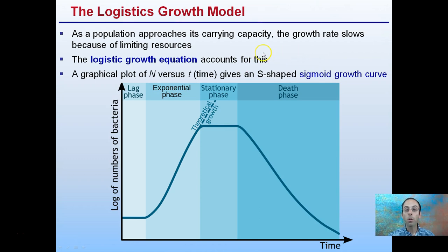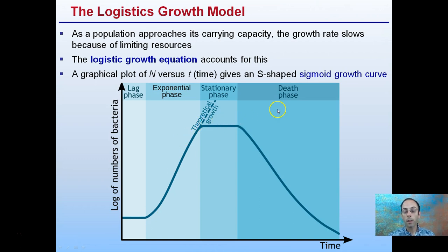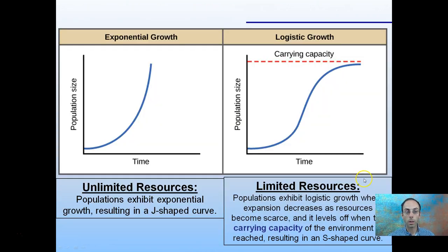As the population approaches its carrying capacity, the growth rate slows because of limiting factors — the logistic growth equation accounts for this. The graphical plot of N (number of individuals) versus T (time) gives an S-shaped sigmoidal growth curve. We start with an exponential phase, then a stationary phase where things level off, and in some examples also a death phase that falls back down over time.